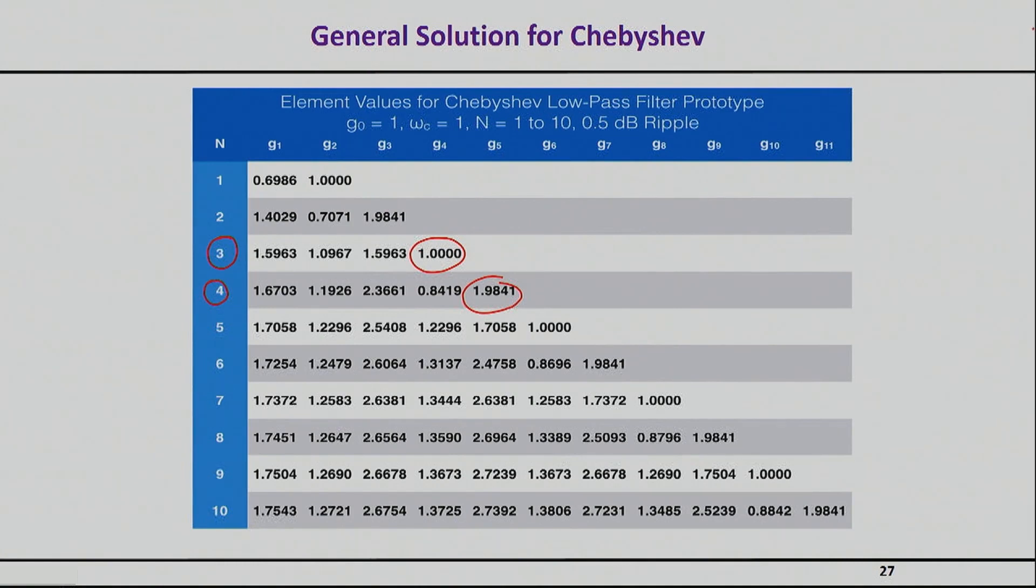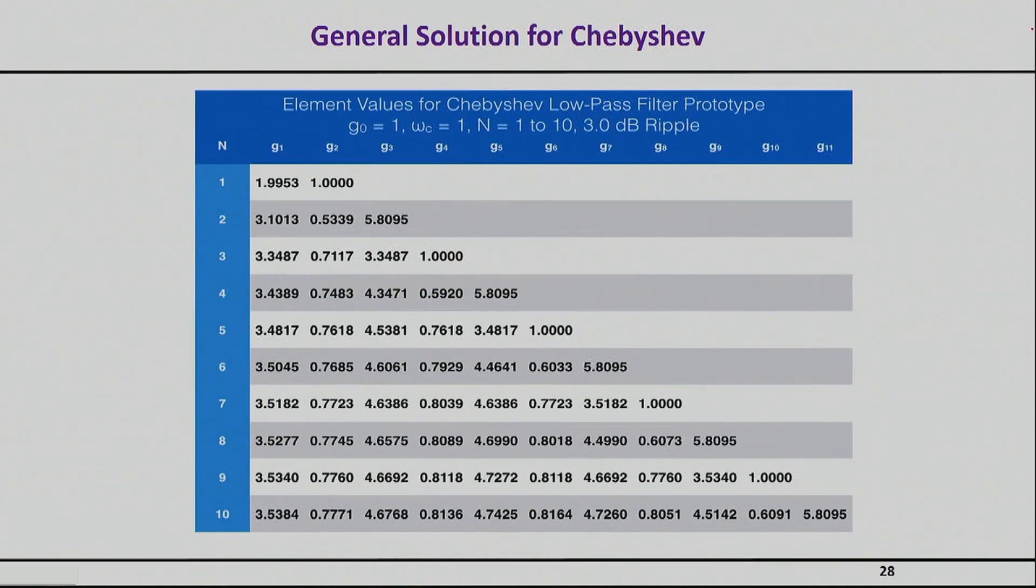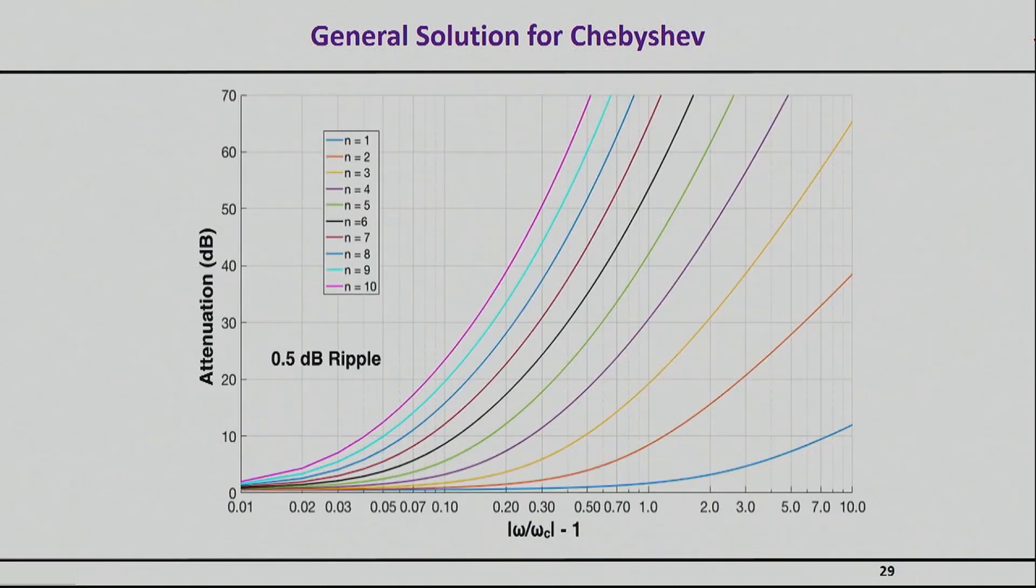Also you will find many different tables for different levels of ripple. This is a case for 0.5 and 3 dB. Here I copy two tables that you will find often in books, but to be quite honest with you, these are not useful tables in the sense that no one designs a Chebyshev for 3 dB. In fact, even half a dB ripple is pretty high—most people will design 0.1 to 0.2 dB ripple these days.